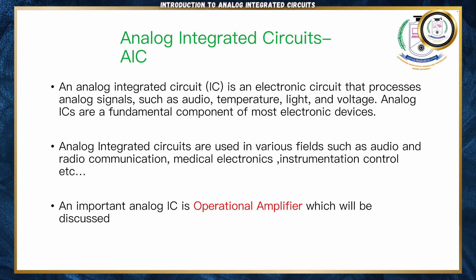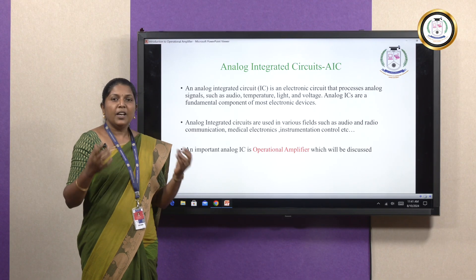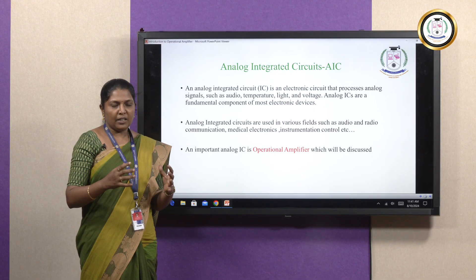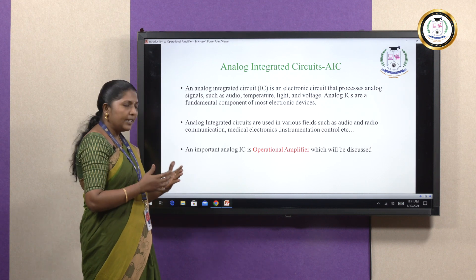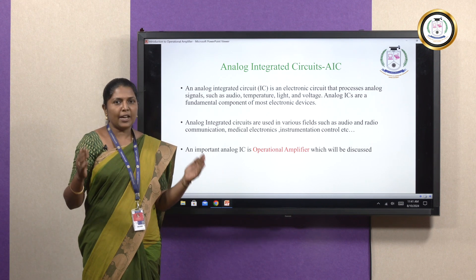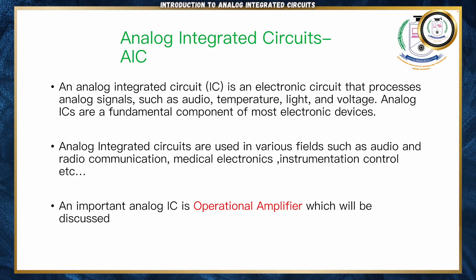Next, we are going to see about Analog Integrated Circuits (AIC). An analog integrated circuit is an electronic circuit which operates with analog signals. An analog signal is a signal which is continuous with respect to time and voltage. Most signals found in nature are analog, such as audio, video, temperature, light, and voltage — everything is continuous throughout time. Such signals are called analog signals.